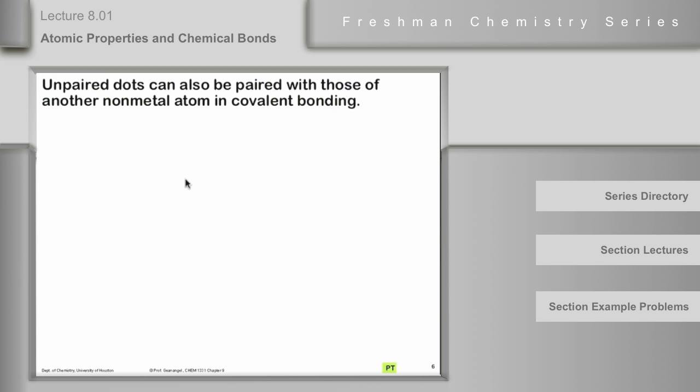Unpaired dots can be paired with those of another non-metal atom to make covalent bonds. The number of unpaired dots, then, would represent the number of bonds that a non-metal might form.